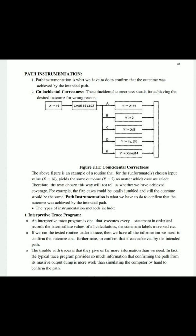For example, the five cases could be totally jumped and the outcome would still be the same. Path Instrumentation is what we have to do to confirm that the outcome was achieved by the intended path. Path Instrumentation uses three types of instrumentation methods.